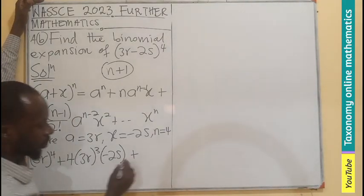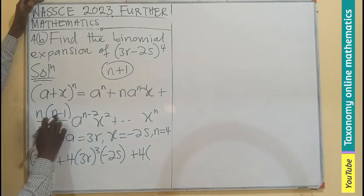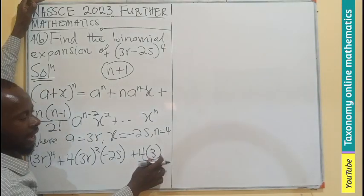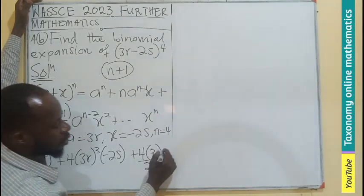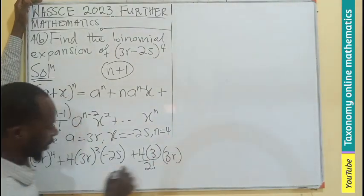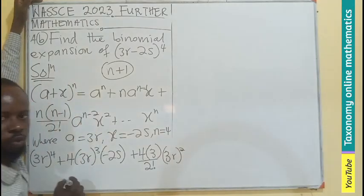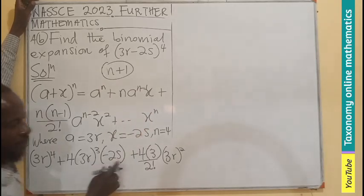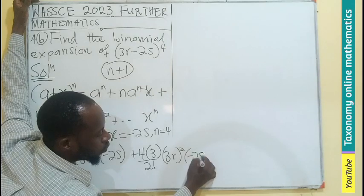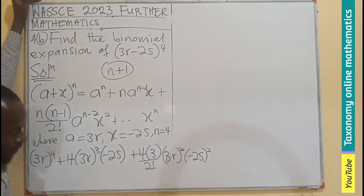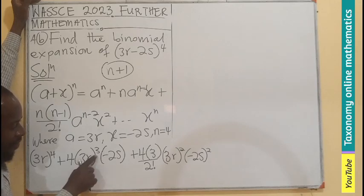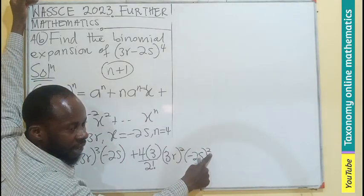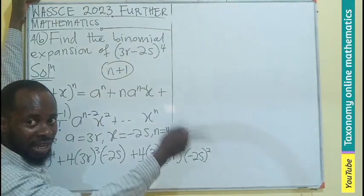The third term is going to be 4 multiplied by (4 minus 1), that is 3, divided by 2 factorial. Then A is 3R exponent 2, and X which had exponent 1 will now have exponent 2. So we are decreasing for the first term and increasing for the second term.